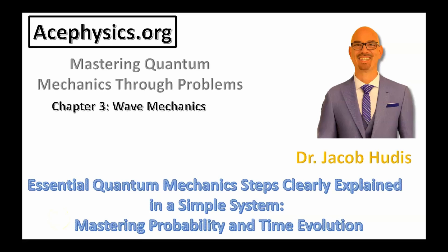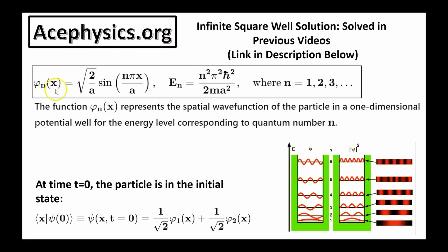Hello and welcome to another episode of Mastering Quantum Mechanics Through Problems. My name is Dr. Jacob Hewdis. In this presentation, I will solve a problem that helps to understand some key operations in quantum mechanics, including finding the expectation values of position, momentum, and energy. To begin, I present the solutions to an infinite square well potential, which was solved in a previous video — the link will be in the description.